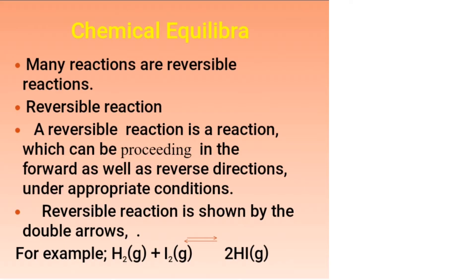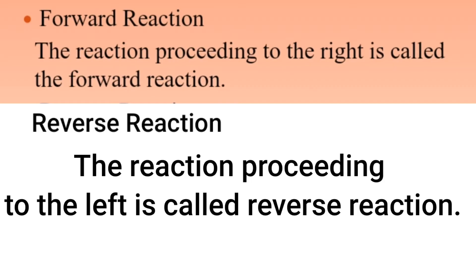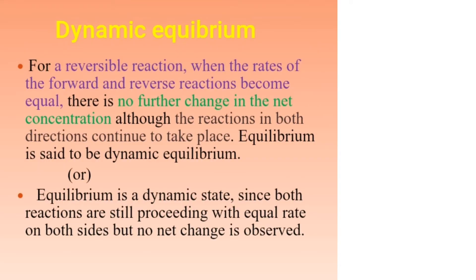The reactions can proceed in the forward as well as the reverse direction. A reverse reaction arrow proceeds to the left. Equilibrium is reached for a reversible reaction at the point when the rates of the forward and reverse reactions become equal.